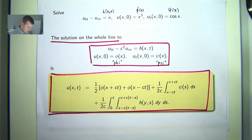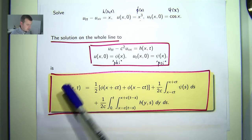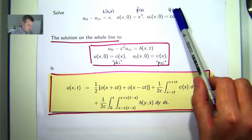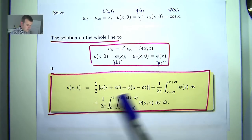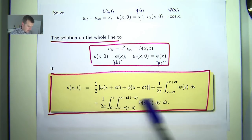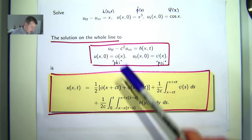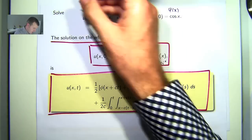Okay, so essentially all we have to do is for this h, this phi and this psi, evaluate this expression. Now c is 1 in this case.